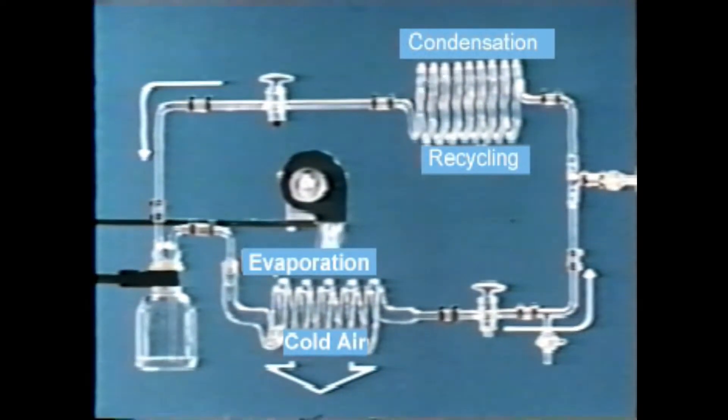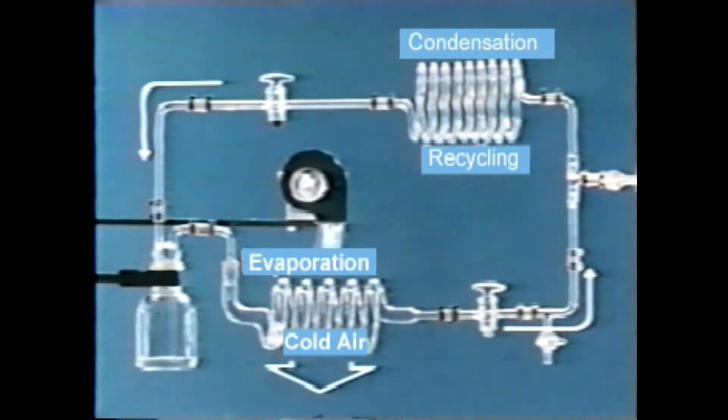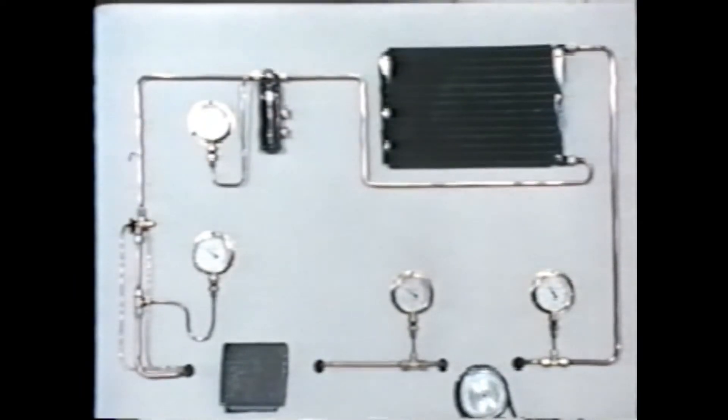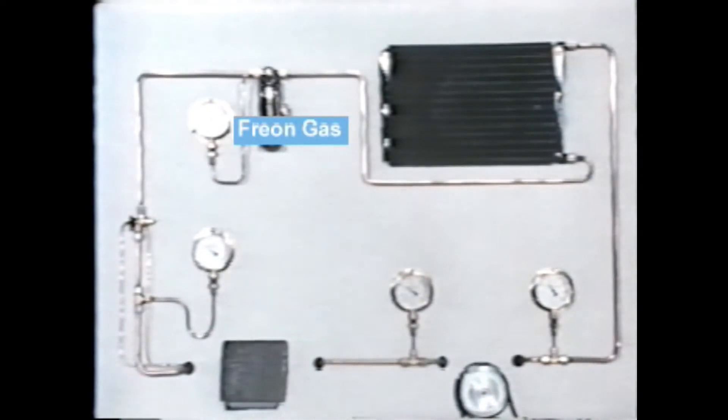In the actual refrigerating cycle of a car air conditioner, a liquefied gas called freon is used instead of ethyl. For easy evaporation, freon liquid is expanded at the expansion valve and sent to the evaporator.